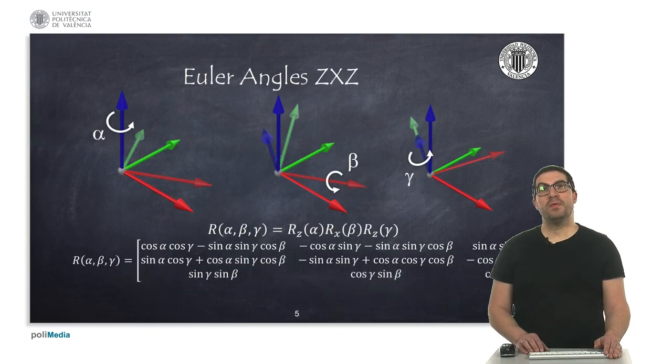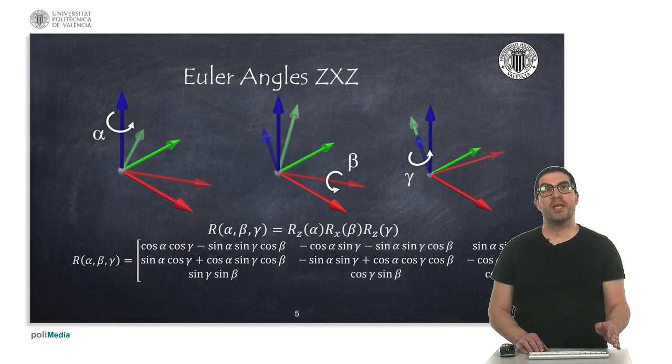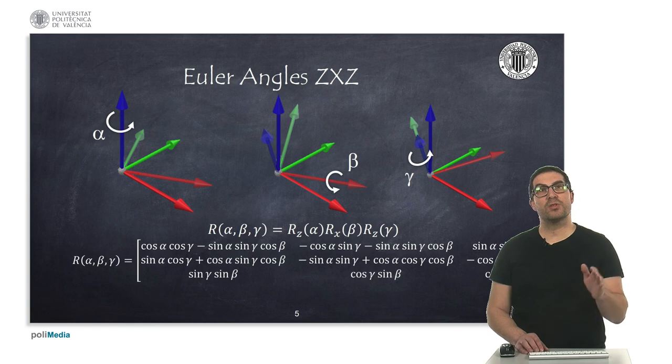To be more specific, we show here a representation of three consecutive rotations using Euler representation ZXZ. As I said, we need to understand these rotations read from left to right letters and apply to the mobile reference frame.